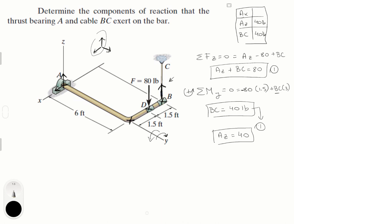Now Ax: you can do sum of the forces in the X is equal to zero, and the only force in the X is Ax, so you know that Ax is equal to zero. So that's the answer for Ax, Az, and BC.